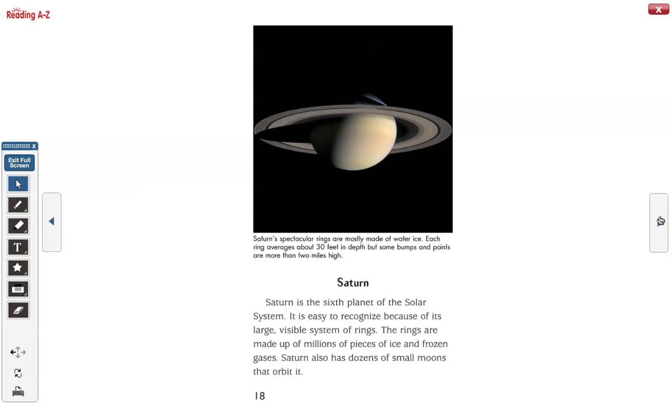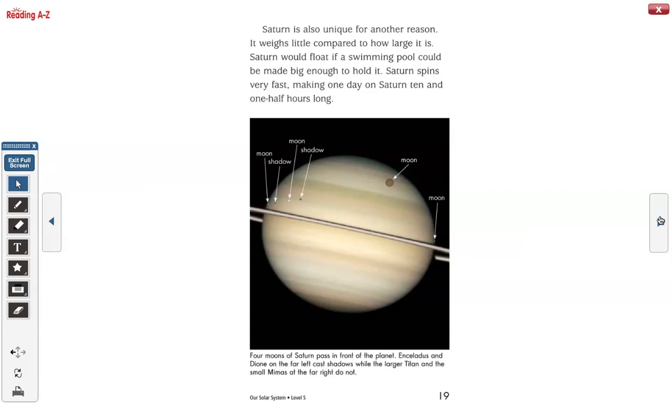Saturn is the sixth planet of the solar system. It's easy to recognize because of its large visible system of rings. The rings are made up of millions of pieces of ice and frozen gases. Saturn also has dozens of small moons that orbit it. Saturn is also unique for another reason. It weighs little compared to how large it is. Saturn would float if a swimming pool could be made big enough to hold it. Saturn spins very fast, making one day on Saturn ten and one-half hours long.